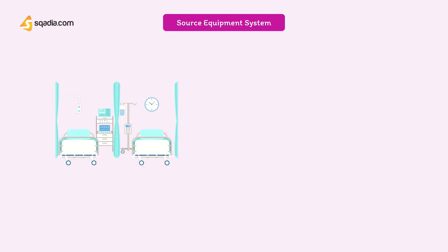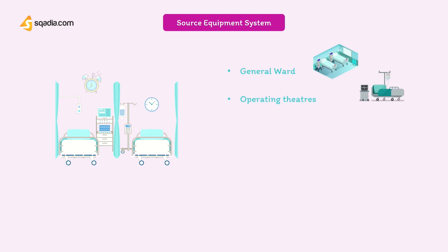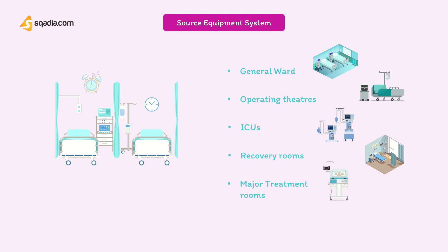Source equipment systems are generally required to be monitored by alarm systems at the point of supply for abnormal gas pressures in areas such as general wards, operating theaters, intensive care units, recovery rooms, or major treatment rooms.